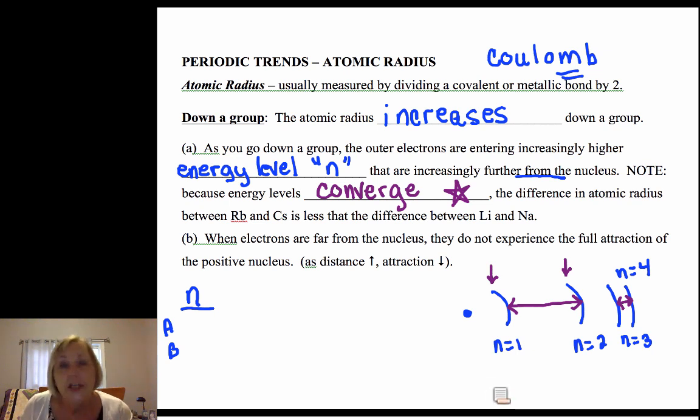When you think of Coulomb's law, you have a charge—electrons are negative, you have a positive nuclear charge. Electrons that are further away, as you increase distance, you decrease attraction. So there's Coulomb's law in action.